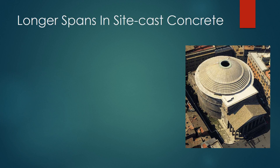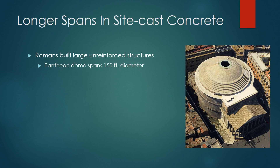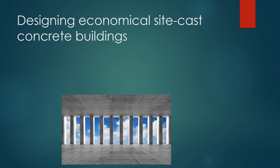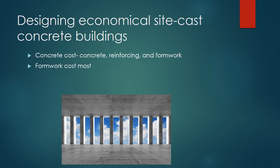Long spans and site-cast concrete: impressive concrete spans have been achieved well before reinforcing. The Romans' domed roof over the Pantheon spans 150 feet in diameter. Today, concrete is still used to span distances because of structural forms that work entirely in compression. Designing economical site-cast concrete buildings is also important. The three things that make up costs in a concrete building frame are concrete, reinforcing steel, and formwork — formwork usually costs the most. Making simplified and repetitive concrete structures makes construction more economical.